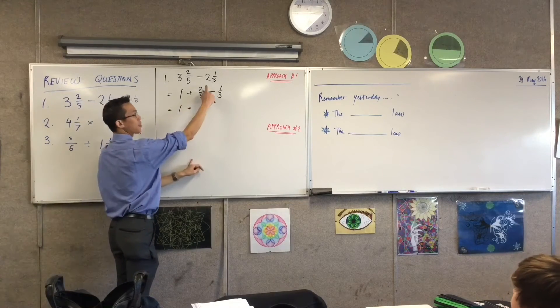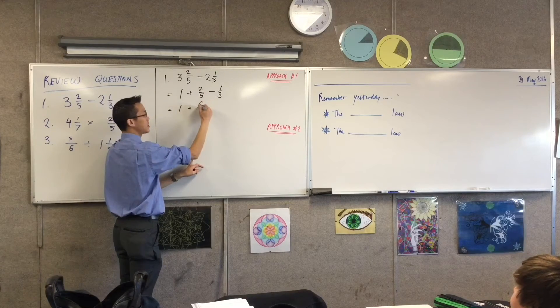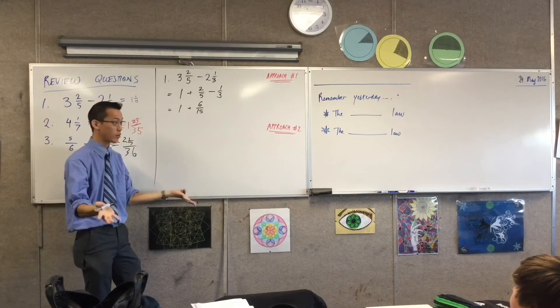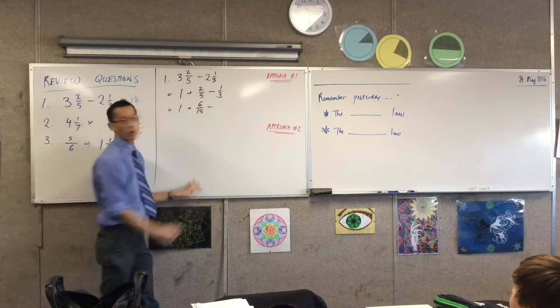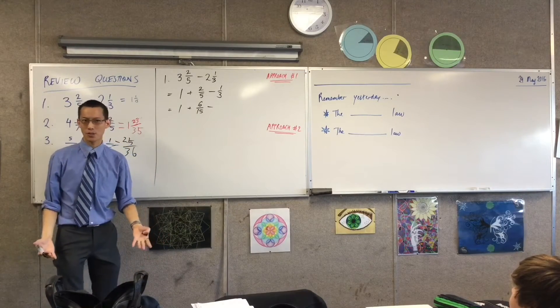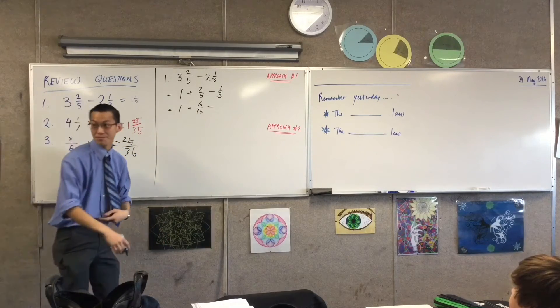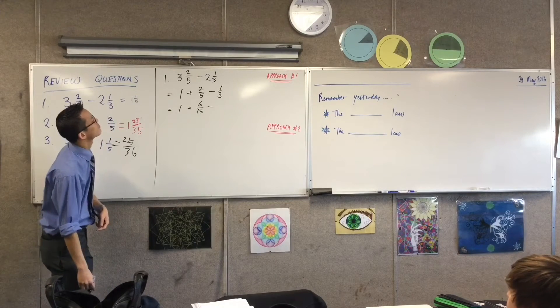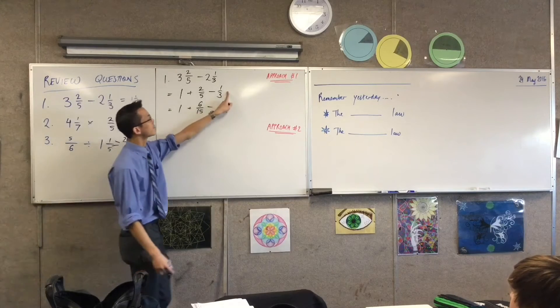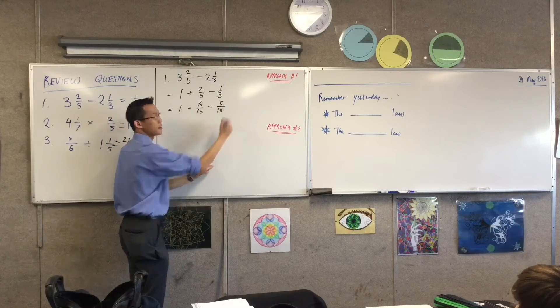So if I multiply by three over three, that'll be six over fifteen. Does that look good? Is that equivalent? And I also want the other fraction to be fifteen, so for the numerator and the denominator you times by five. Fantastic, so that gives me this.